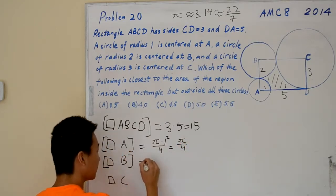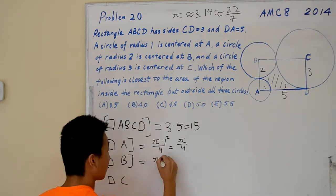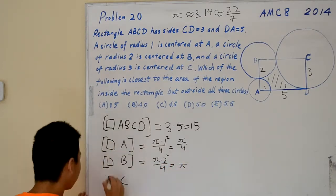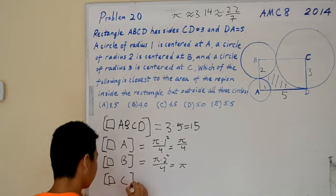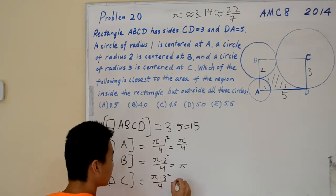We'll do the same for quarter circles B and C. That's pi times 2 squared over 4, which equals pi. And then C: pi times 3 squared over 4, which is 9 pi over 4.